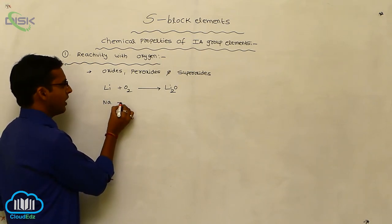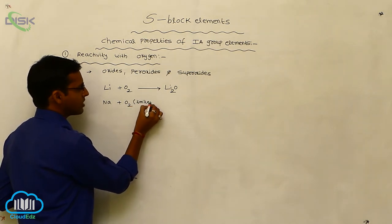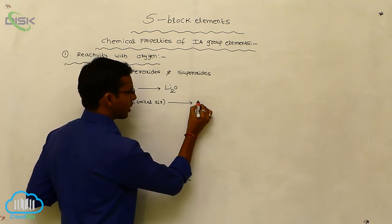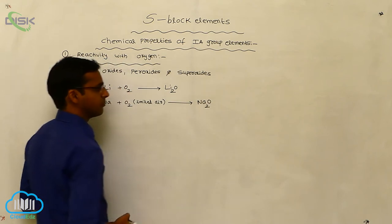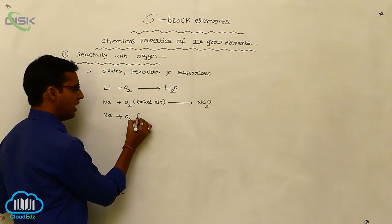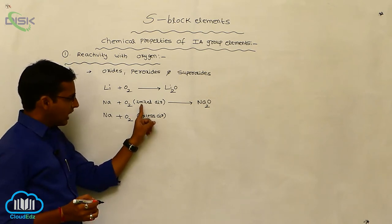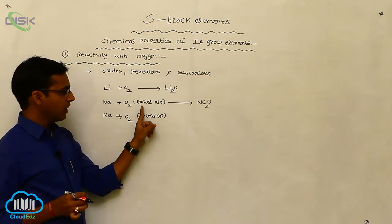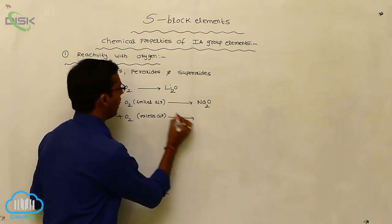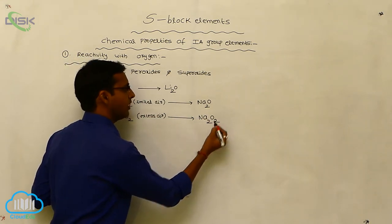Next, sodium reacted with oxygen in limited air — that is, in the presence of a less amount of oxygen — it forms sodium oxide. Whenever sodium metal is reacted with oxygen in excess air, meaning more amount of oxygen, it forms the peroxide sodium peroxide, Na₂O₂.